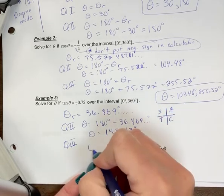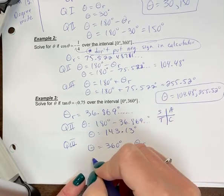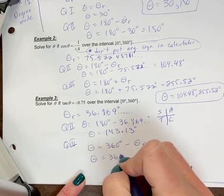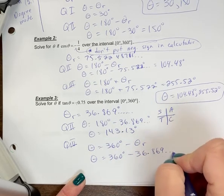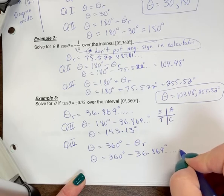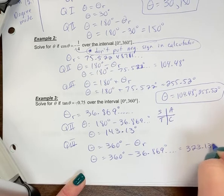In quadrant four, theta is equal to 360 degrees minus the reference angle. So theta is equal to 360 minus 36.869, et cetera. So again, put three or four decimals in. 323.13 degrees.